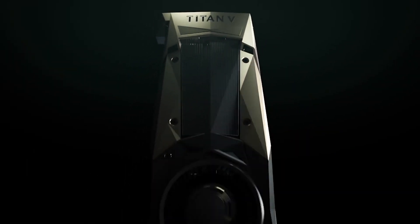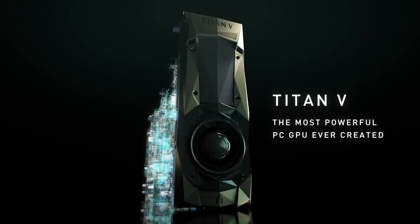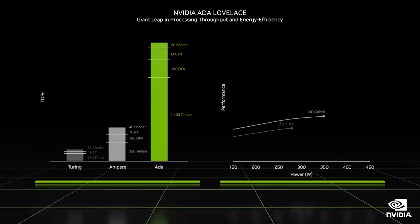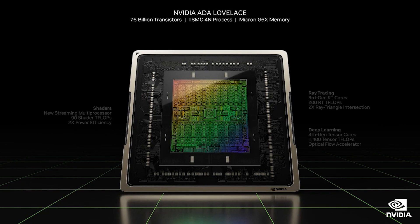I actually put out a video a couple of months back, and I'd actually been speaking to a source who swore to me that Titan was coming for Lovelace. It was outfitted with basically the full core implementation — so it had a few more SMs, a little more compute grunt over the 4090 Ti, whatever you want to call it. But basically it had double the amount of RAM, so it had 48 gigabytes. And I have to tell you guys that I've been hearing that that's not true.